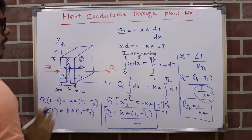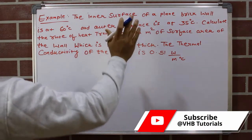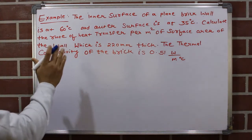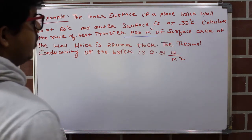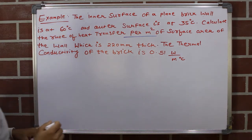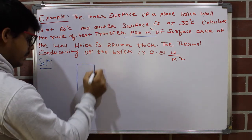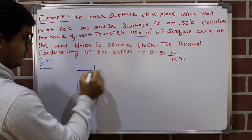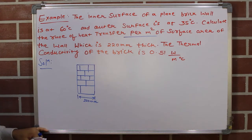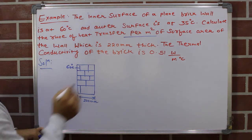Now we will solve an example related to this topic. Example: The inner surface of a plane brick wall is at 60°C and the outer surface is at 35°C. Calculate the rate of heat transfer per meter square of surface area. The wall is 220 mm thick and the thermal conductivity of the brick is 0.51 W/m·°C. First, we draw the brick wall of thickness 220 mm.